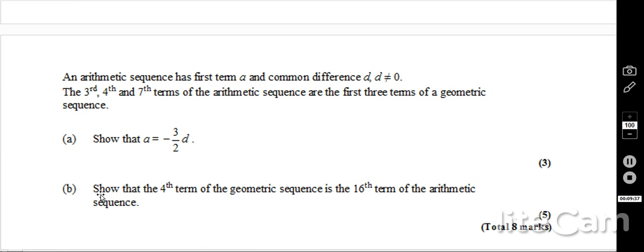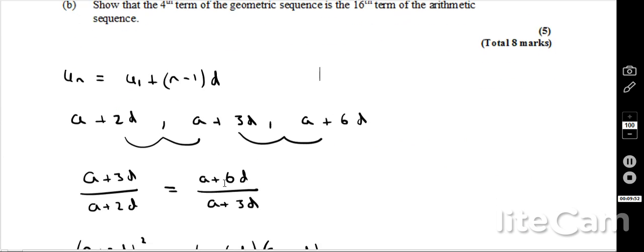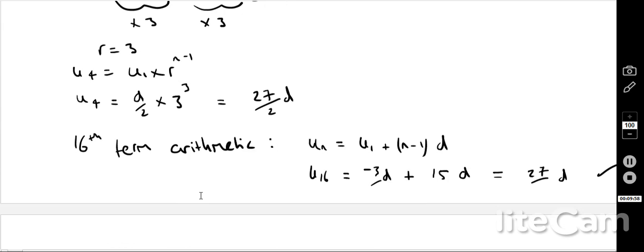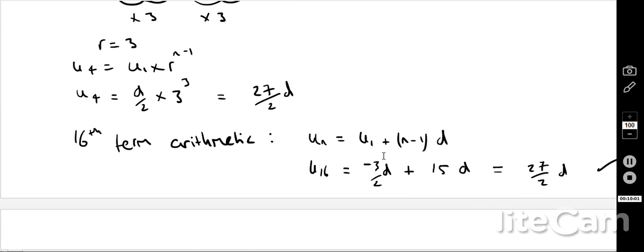Because it says show that, we can actually work from both sides. So I've already shown what the fourth term of the geometric sequence looks like. If I basically now work out the 16th term of the arithmetic sequence, I can just basically just show that they're the same. So the 16th term of the arithmetic, well, I'm using this formula here, Un equals U1 plus N minus 1 times D. So the 16th term, U16, is minus 3 over 2D. That's the first term, plus 15 lots of D. And therefore, that does indeed give me 27 over 2 lots of D.